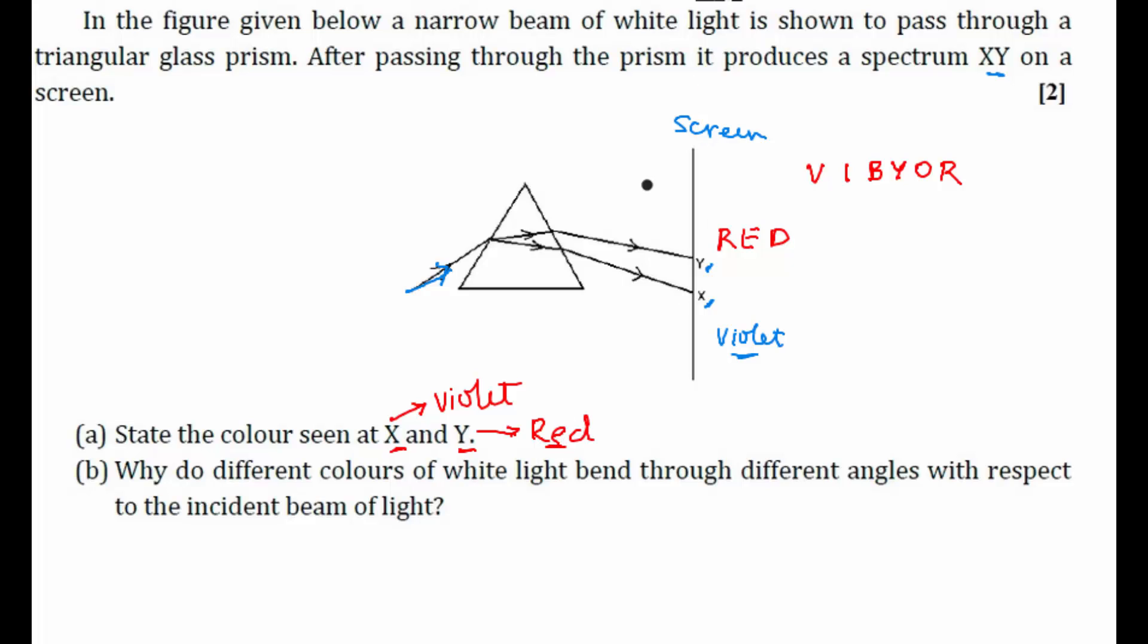What is our second question? Why do different colors of white light bend through different angles with respect to the incident beam of light? So this is our incident beam of light. It should actually go like this. But it is split into seven different colors and each color is bending at different angles. That's why we get here different colors.